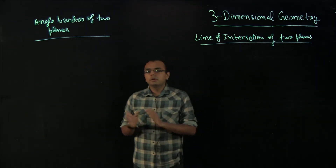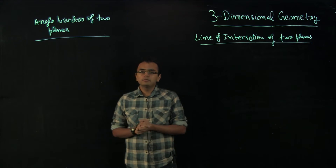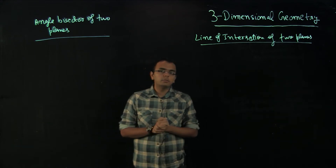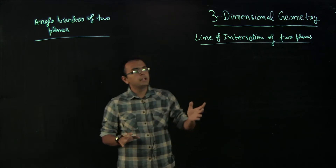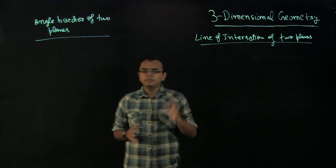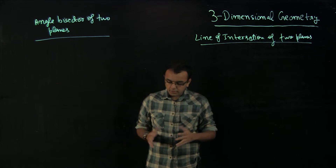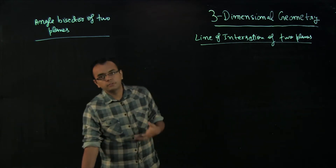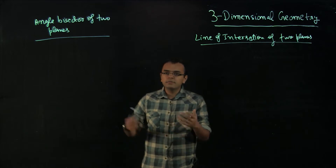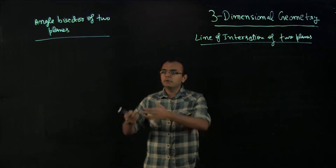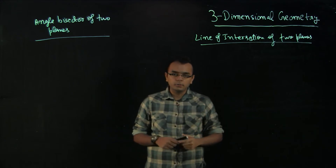In this video for 3D geometry, we will be talking about two topics: the angle bisector of two planes and the line of intersection of two planes. Both topics are important, especially the line of intersection, and I will be spending some time on that. The angle bisector of two planes is a very easy topic, something you should remember while preparing for JEE.